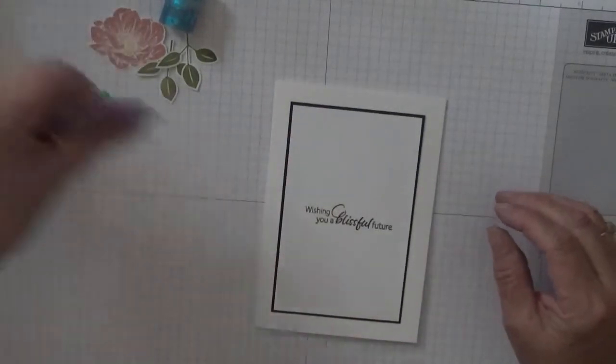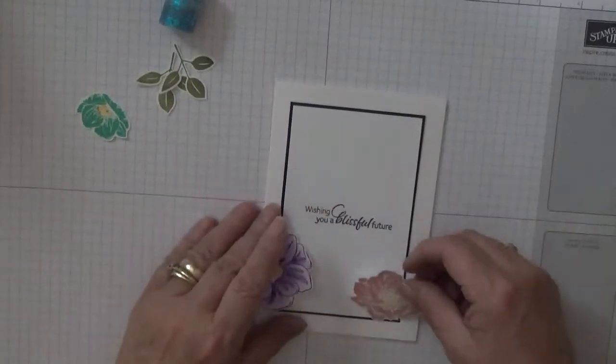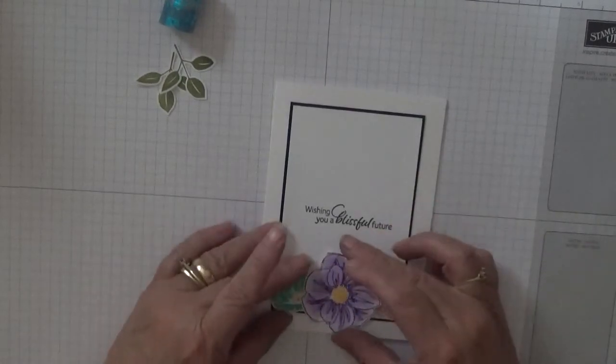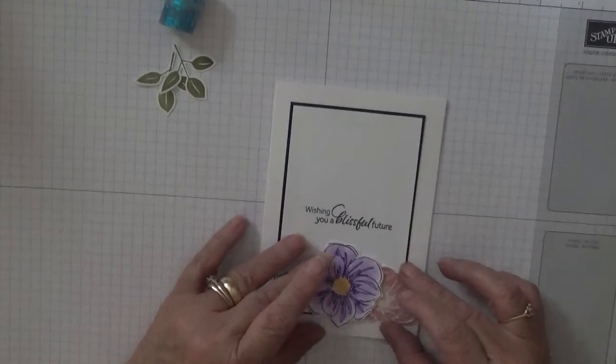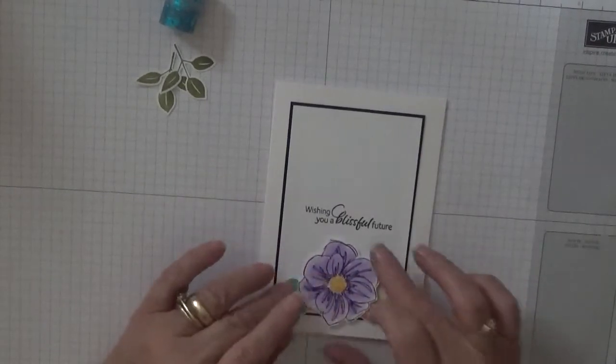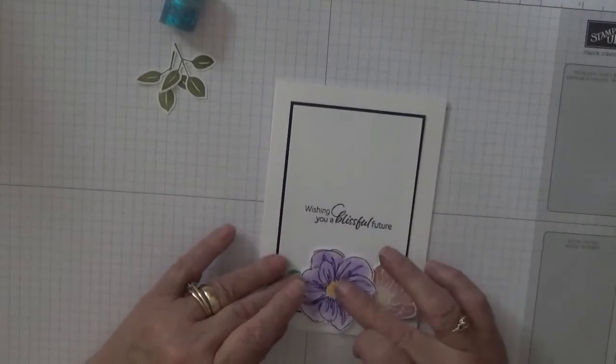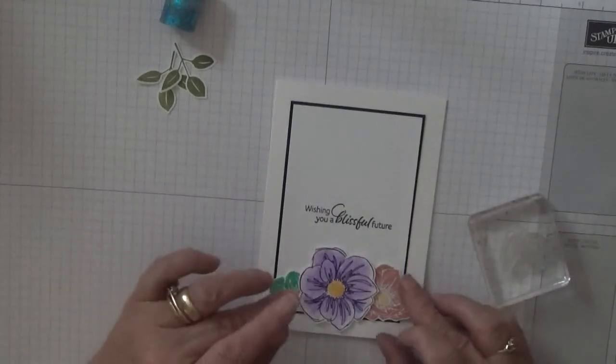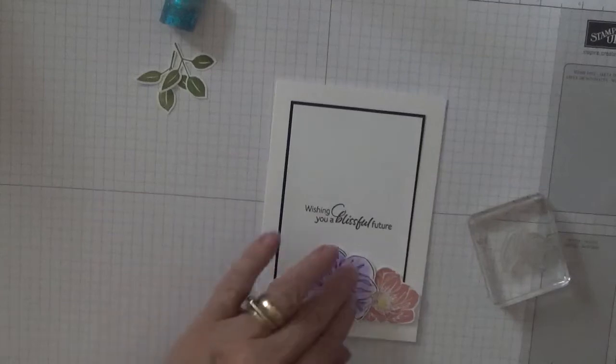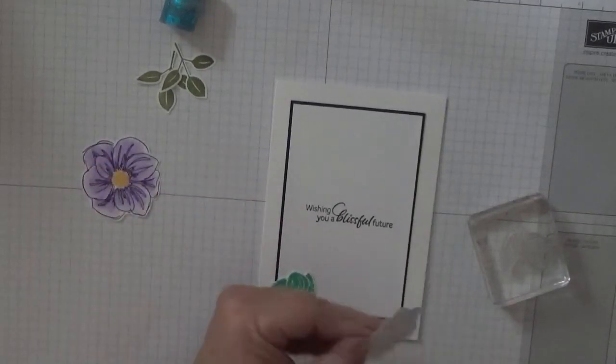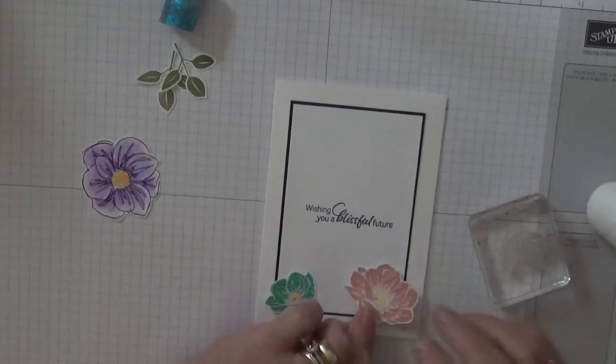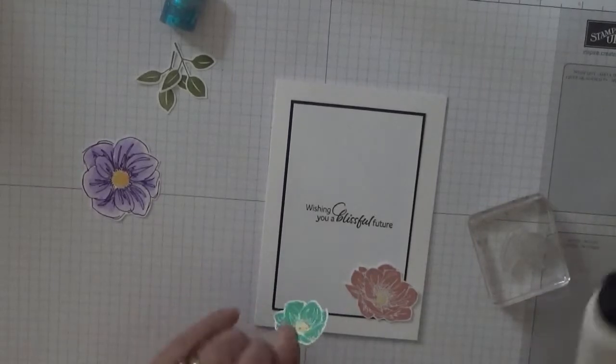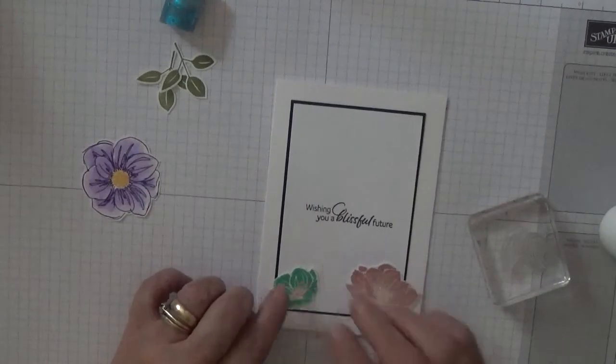Right, now our flowers. We're going to have our Blushing Bride one there, our Coastal Cabana one there, and this one will be up on dimensionals. But we've got these to stamp, so I want to stick these two down first. Stick that one down, and stick that one down.